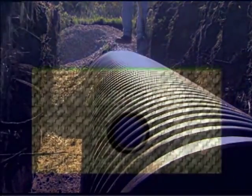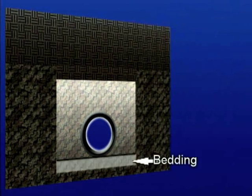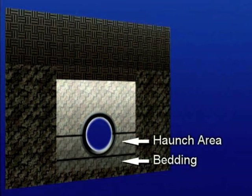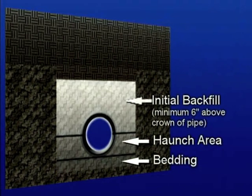This method will also keep the pipe from shifting during the backfill process. The most critical area of the backfill structure is the envelope surrounding the pipe system. The backfill material surrounding the pipe provides strength to the pipe-soil system, and in large part will determine how the pipe will perform. This envelope includes the bedding, the haunch area, and the initial backfill area.